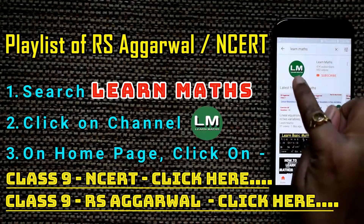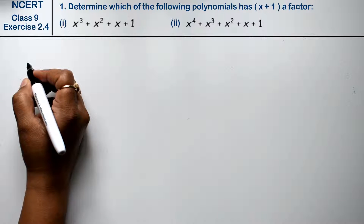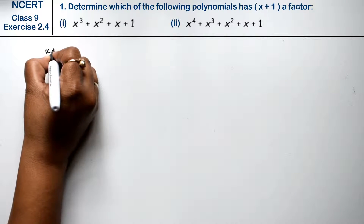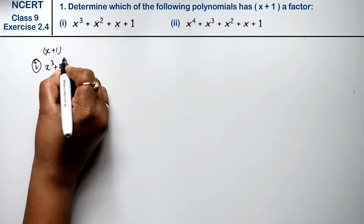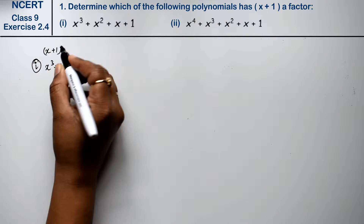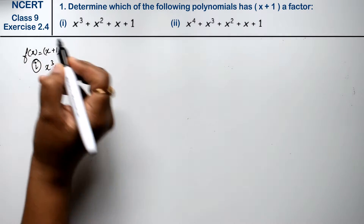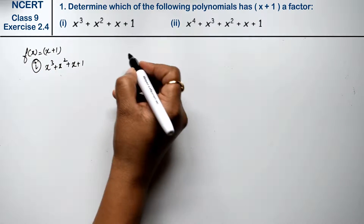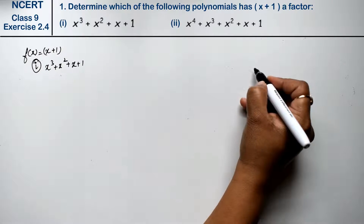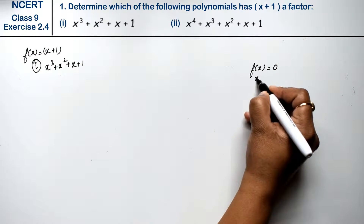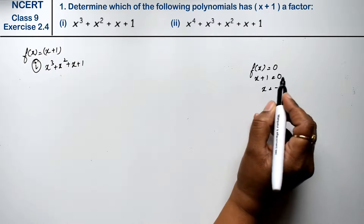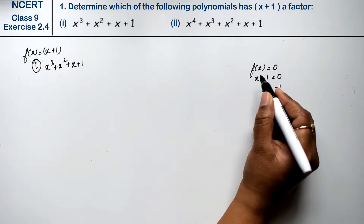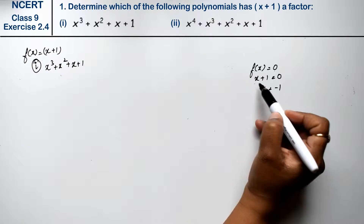Let's do question number 1 of Exercise 2.4, that is polynomials. We have to determine which of the following polynomials has (x+1) as a factor. For factor theorem, we set f(x) = 0, so x + 1 = 0 gives x = -1. Whether doing factor theorem or remainder theorem, we set it to zero, find the value of x, and then substitute it.